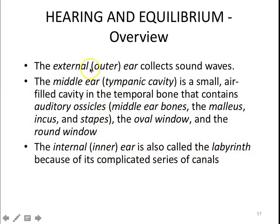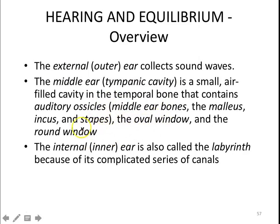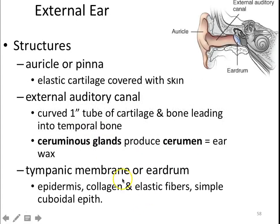So the external ear predominantly just collects sound waves. Think about animals that have very large ears — they'll even orient their ears toward the sound they're trying to hear. The middle ear is a small air-filled cavity that contains those ear bones and the oval and round windows. And then the inner ear, also called the labyrinth, has a lot of different canals — the semicircular canals as well as that snail-shell-looking cochlea.